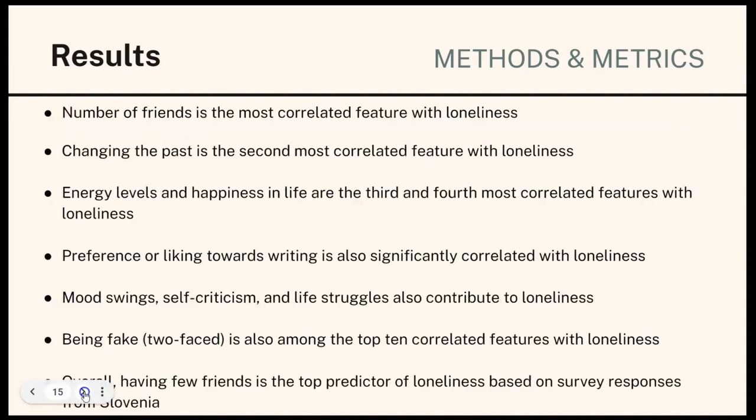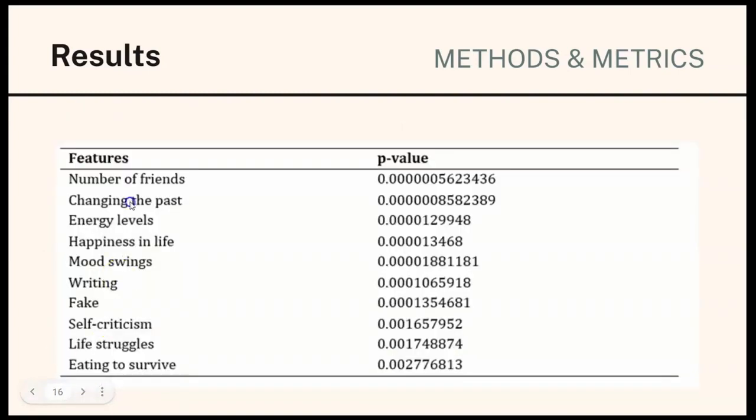In this part, we're going to discuss the correlations of the features. I will just skim through it. We can see the tables for the correlation, and we can see that the number of friends is the highest and the survival horror is the lowest.